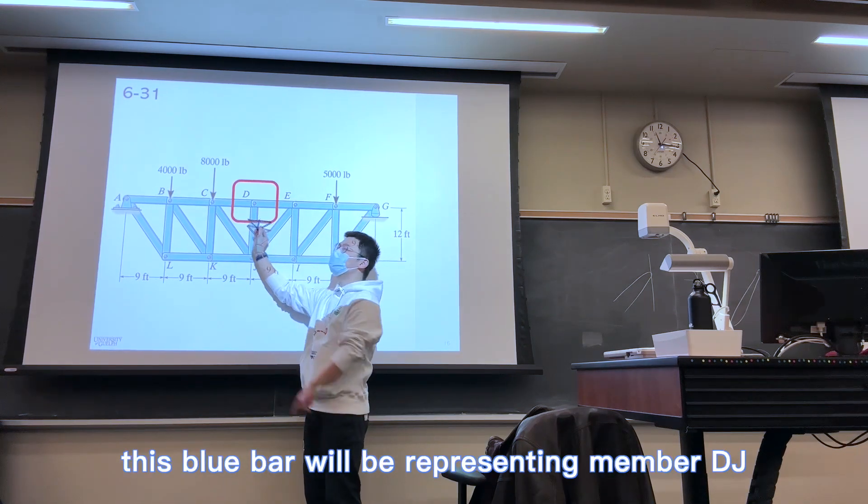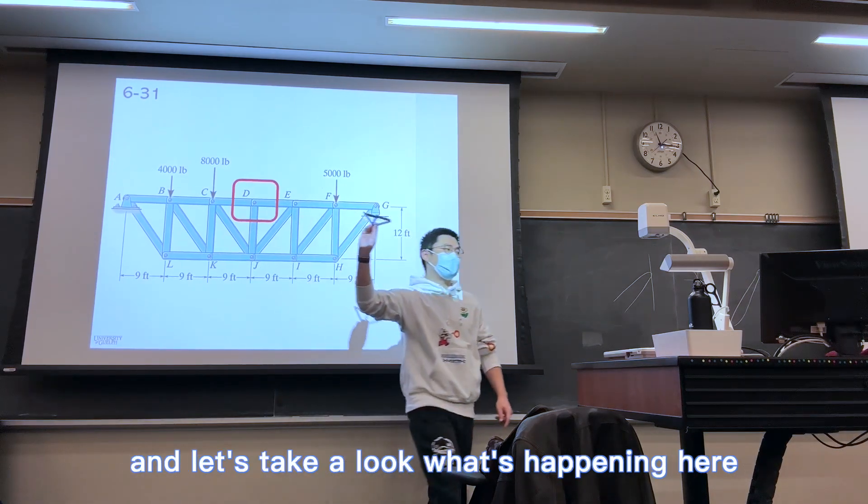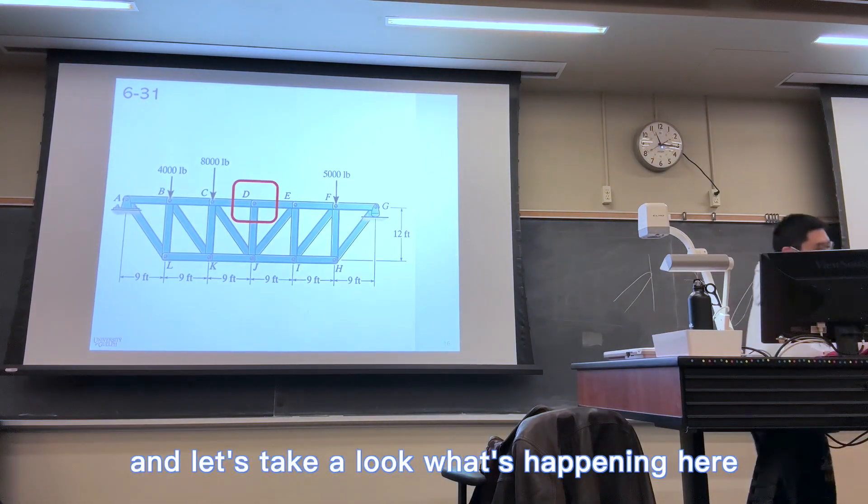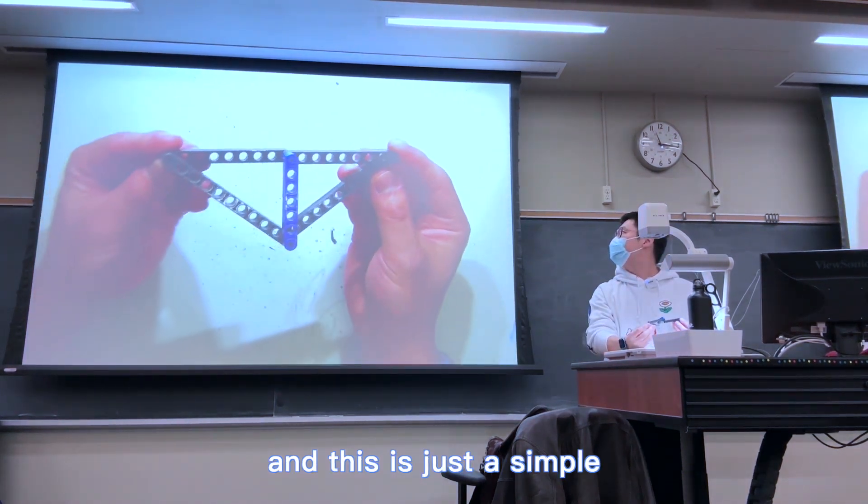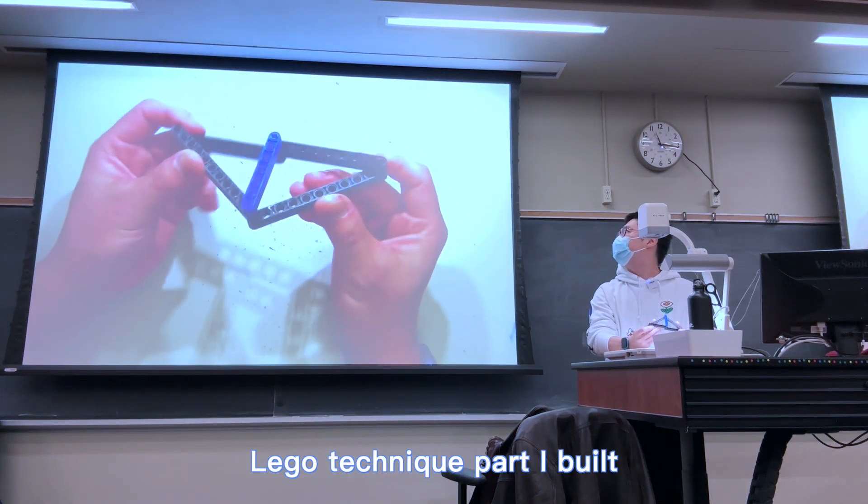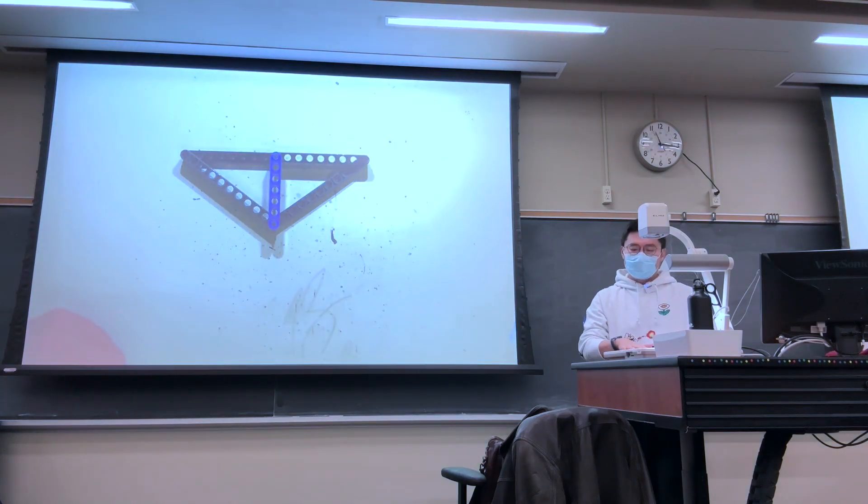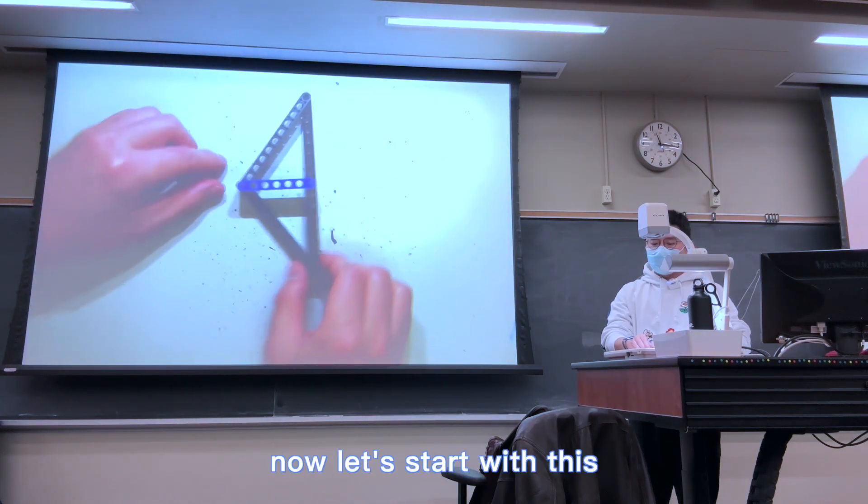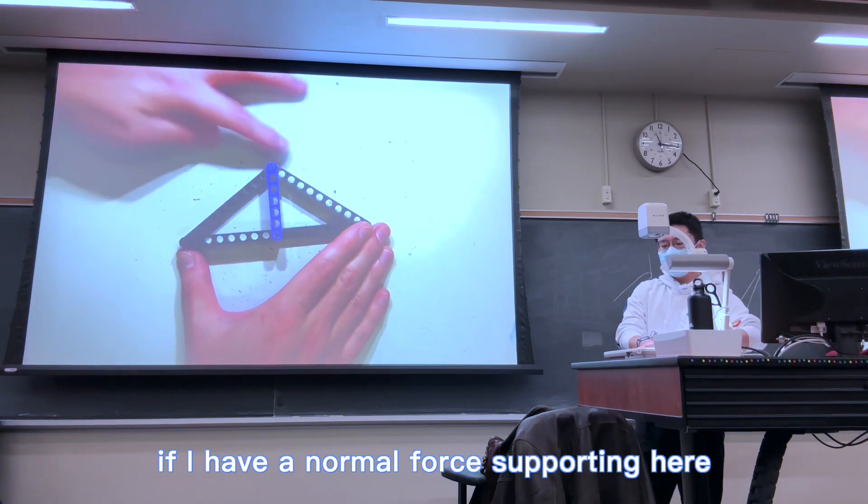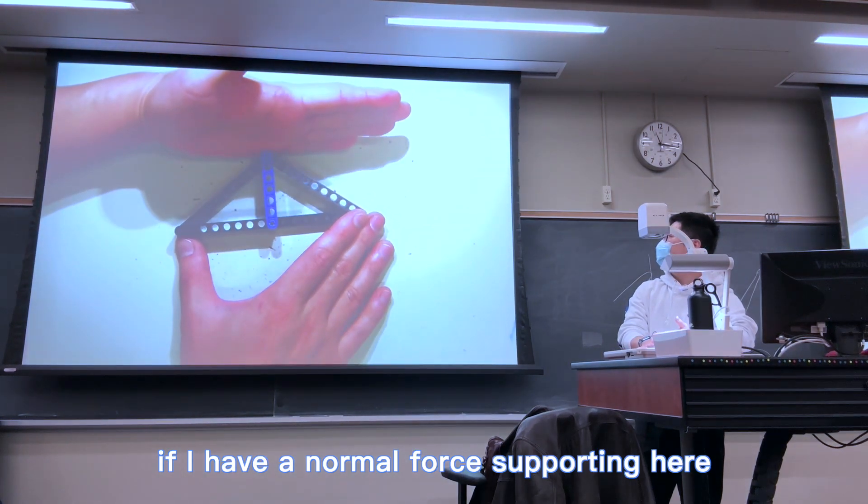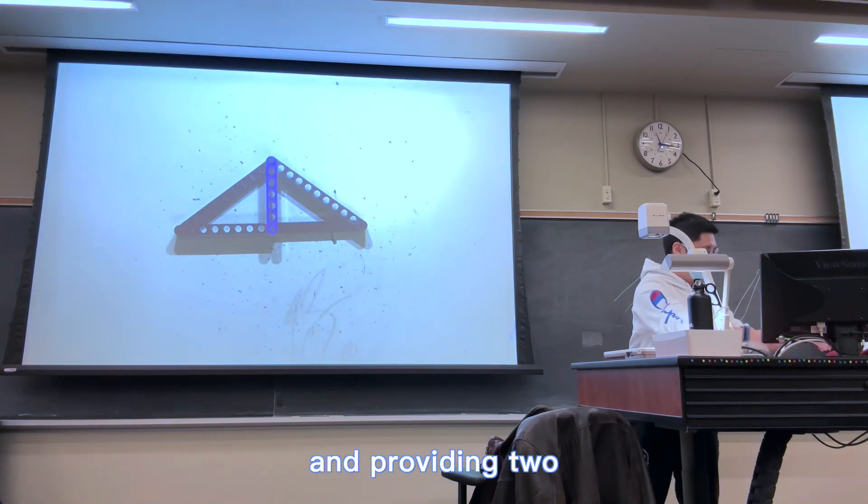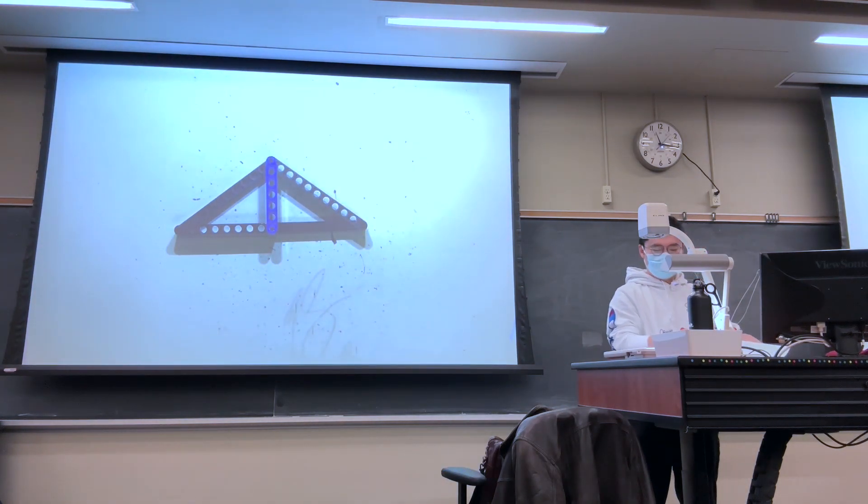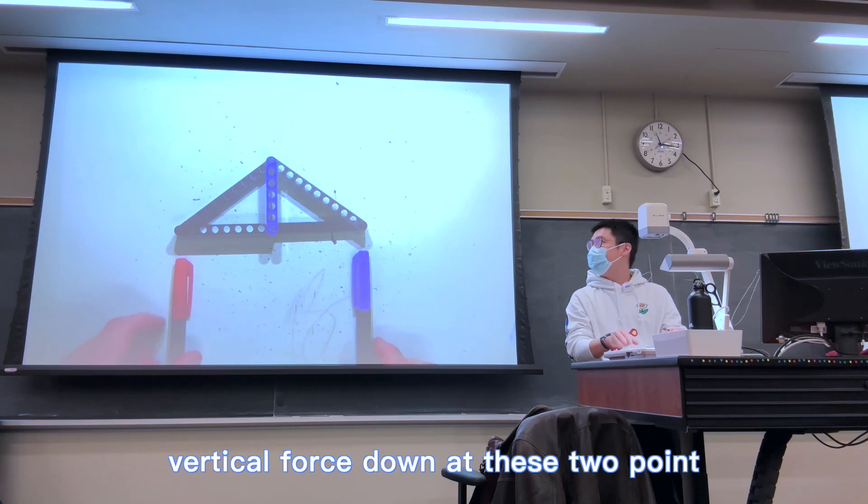This blue bar will be representing member DJ, and let's take a look what's happening here. So this is our member DJ here in blue, and this is just a simple Lego Technic part I built. Now let's start with this. If I have a normal force supporting it here, I'm just using my finger here, and providing two vertical forces down at these two points.